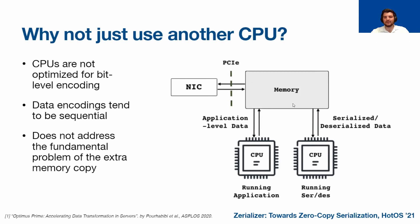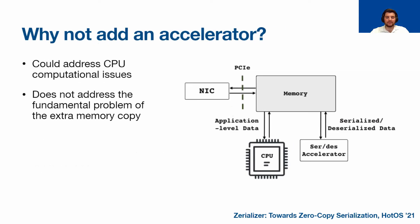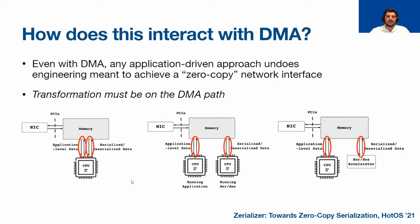Even with two CPUs, you still have two trips from memory to the CPU and back. In the even more extreme case, you might be tempted to add instructions to the CPU or add a dedicated accelerator. This could address the computational issues and handle bit-level encoding more thoroughly. But ultimately, this still doesn't address the memory system performance — you still have the second memory copy no matter what. Ultimately, any application-driven approach undoes the engineering meant to achieve a zero-copy network interface, since in any of these scenarios the serialized data travels up the memory hierarchy and back down in decoded form as a second copy. This uses the cache inefficiently. A true zero-copy approach requires the NIC to be able to decode messages before the DMA transfer into main memory or last-level cache.